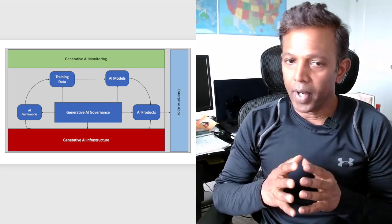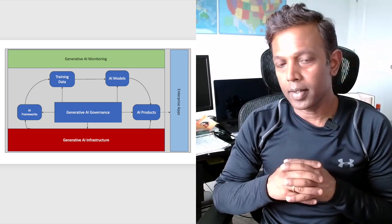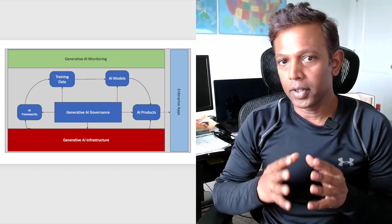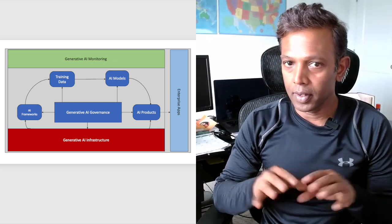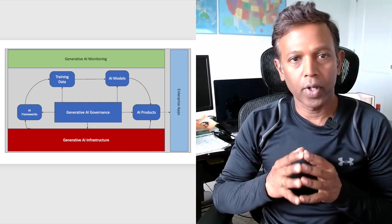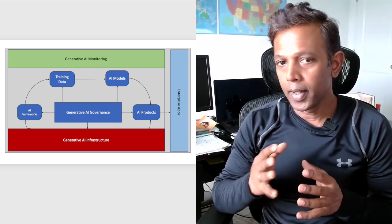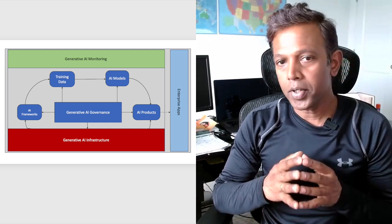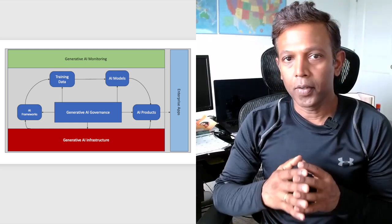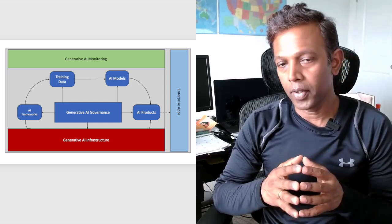And the frameworks — suppose if you are a technology company developing Generative AI models, you need frameworks like PyTorch and WatsonX. All these frameworks need to be available on this infrastructure, and you use those frameworks along with curated data to build and train the model. Once you have this AI framework and the curated data, you can create, build, and deploy the Generative AI model for your organization.